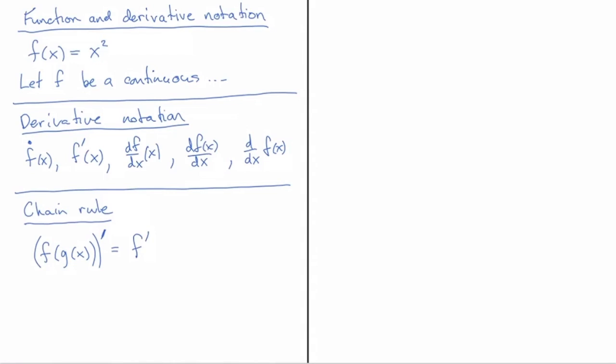So here then the f' is a derivative with respect to its argument whatever goes in the bracket, and then we happen to have g(x) in the bracket and the chain rule tells us that we should take the derivative of that and multiply it to get the overall derivative of the composition.